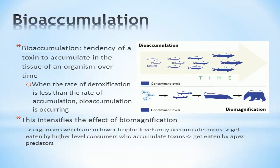Bioaccumulation is similar to biomagnification, but occurs within an organism instead of across trophic levels. Bioaccumulation is defined as a tendency of a toxin to accumulate in the tissue of an organism over time. This occurs when the rate of detoxification within an organism is less than the rate of toxin accumulation. Bioaccumulation tends to magnify the effect of biomagnification — organisms in lower trophic levels may accumulate toxins over time, then get eaten by higher level consumers, which accumulate toxins over time, and so on up the trophic ladder.